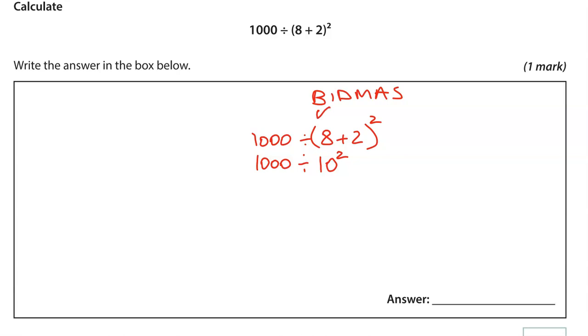Do we have any indices, which is powers? Yes, we do. That's squared here. So we're going to do that before we do division. So 1,000 divided by 10 squared. That is 10 times 10, which is 100. So now we have 1,000 divided by 100. If you divide by 100, that means knocking off two zeros. So that gives us 10.